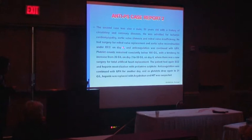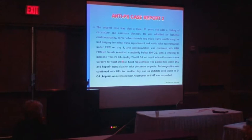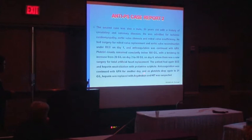He had previous surgery for mitral valve replacement and aortic valve reconstruction under extracorporeal circulation ten years before. In this admission, surgery was performed on D1 and anticoagulation was continued with unfractionated heparin. Platelet counts remained just below 100 giga per liter from D1 to D2, reaching 80 giga per liter on D2. He then had a new surgery for total artificial heart replacement with extracorporeal circulation and heparin neutralization with protamine sulfate. Platelets fell again rapidly to 31 giga per liter.